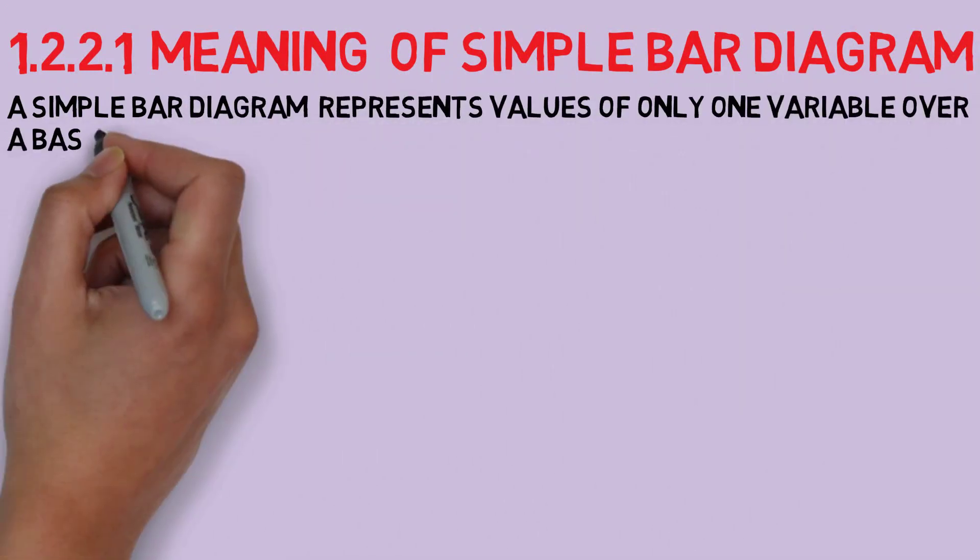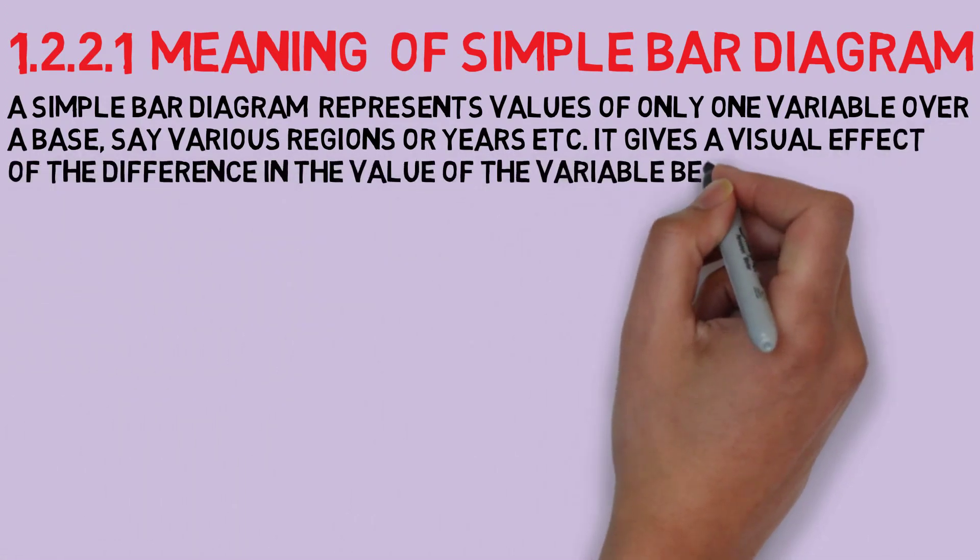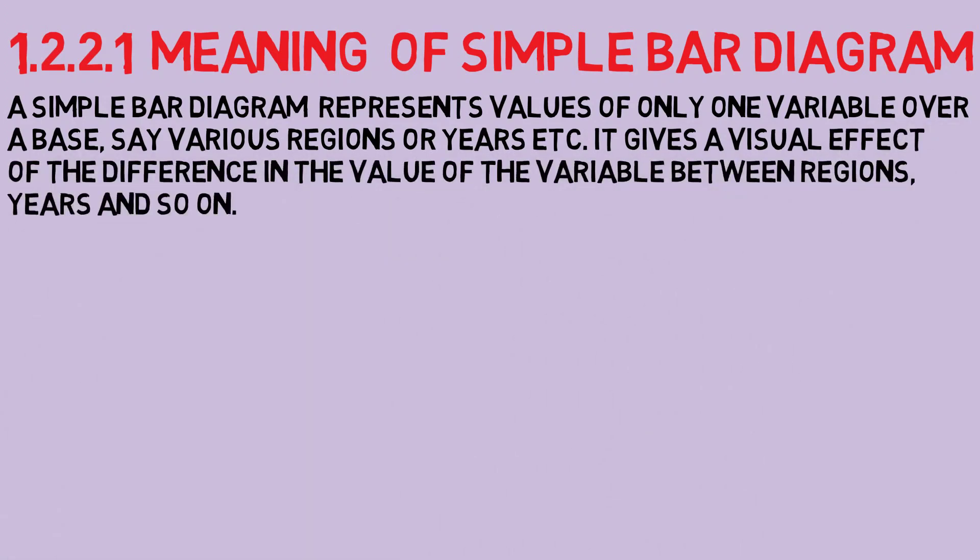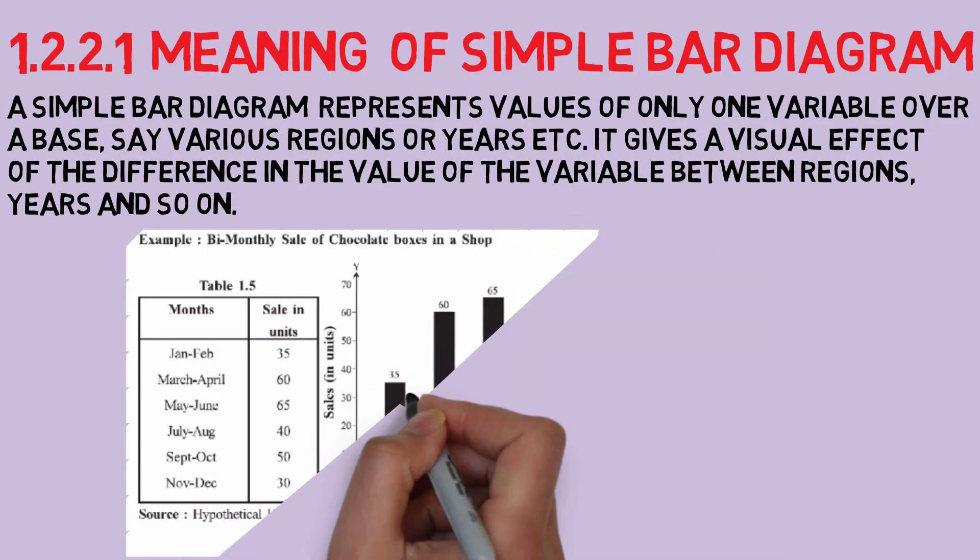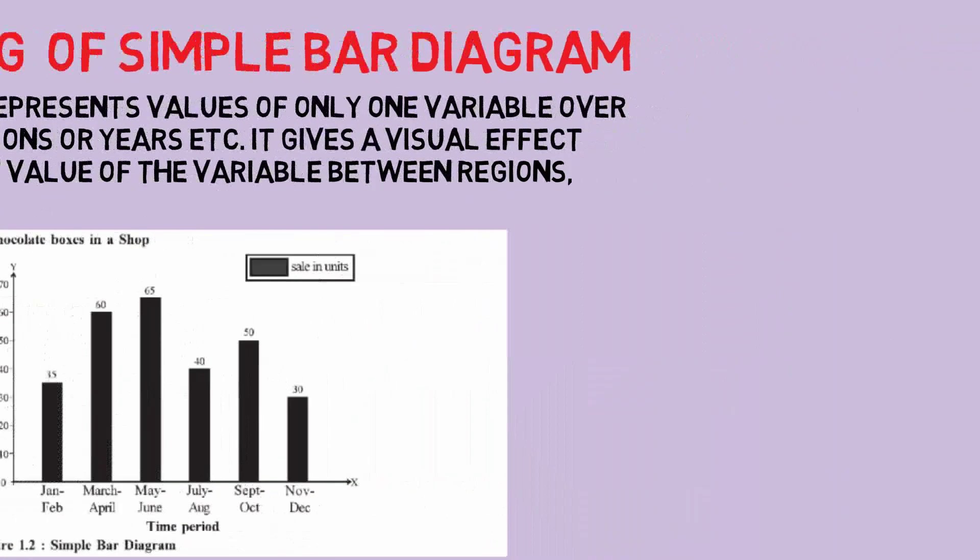Simple bar diagram consists of vertical or horizontal bars of equal width. The length of bars is taken proportionately to the magnitude of the values represented. The width of bars has no significance. Vertical bars are used to represent quantitative data whereas horizontal bars represent qualitative data.